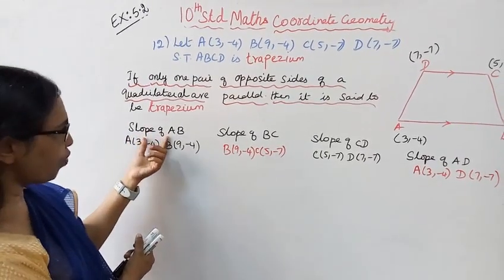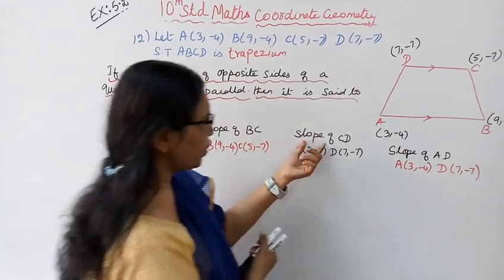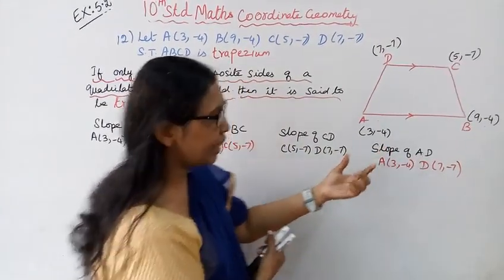To verify this, we calculate the slope of AB, slope of BC, slope of CD, and slope of AD.